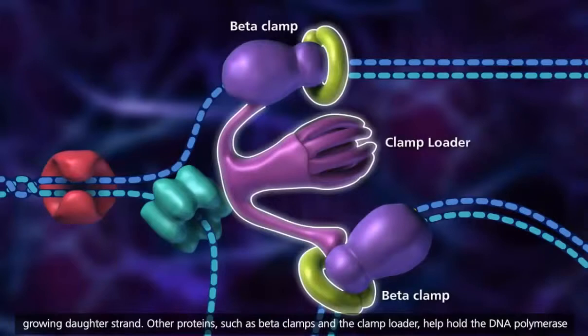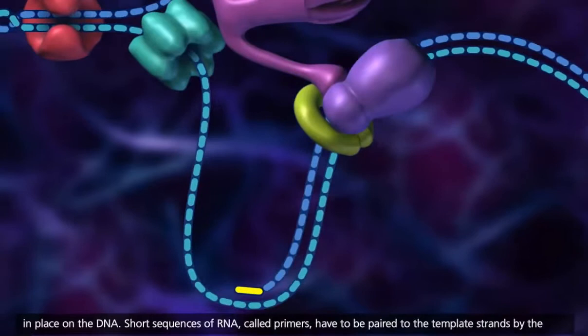Short sequences of RNA, called primers, have to be paired to the template strands by the enzyme primase, because DNA polymerase cannot begin to add nucleotides without a primer.